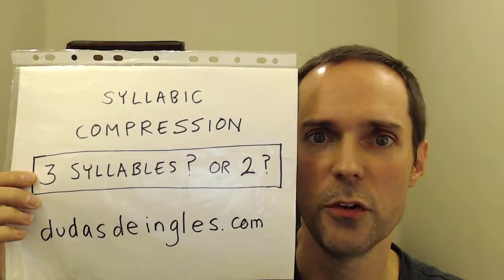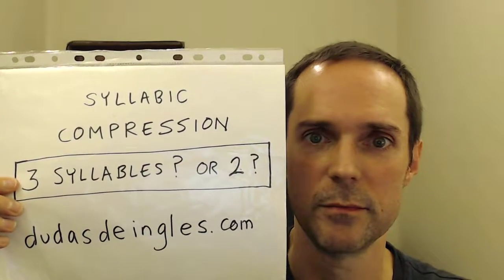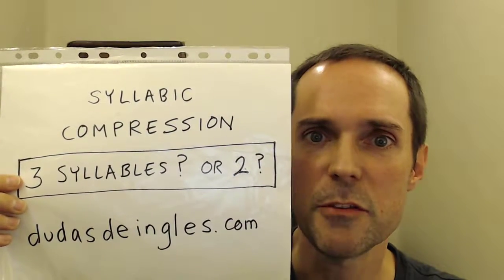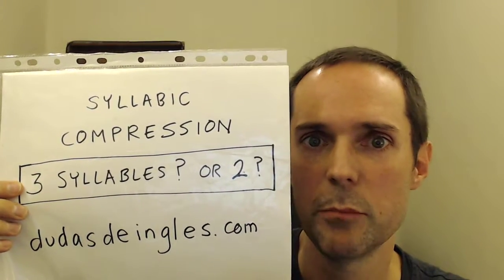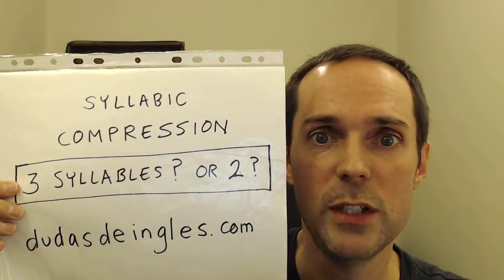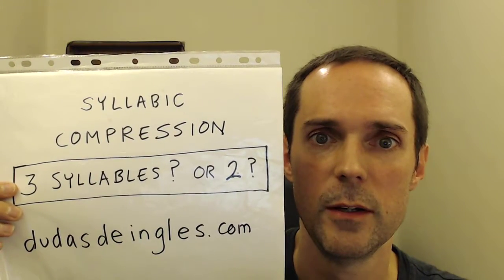Let's talk about something called syllabic compression. Many three-syllable words can be pronounced with a shorter version that has only two syllables. For example, the word camera, with three syllables, we normally pronounce with just two: camera. Basically, this is an option for many words where the stress is on the first syllable and we leave out the second syllable.